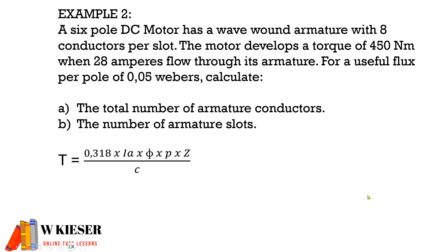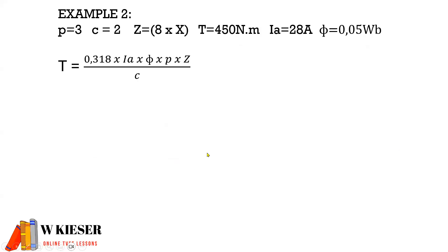In this example, a six-pole DC motor has a wave-wound armature with 8 conductors per slot. The motor develops a torque of 450 newton meters when 28 amperes flows through its armature. For a useful flux per pole of 0.05 Weber, calculate the total number of armature conductors and the number of armature slots. Since we are given a torque of 450 newton meters, we use the torque formula and manipulate the equation to get Z on its own.